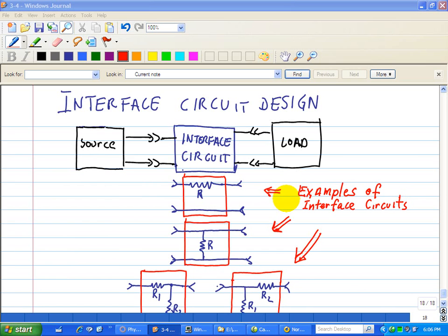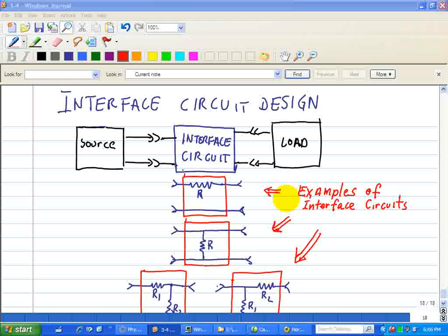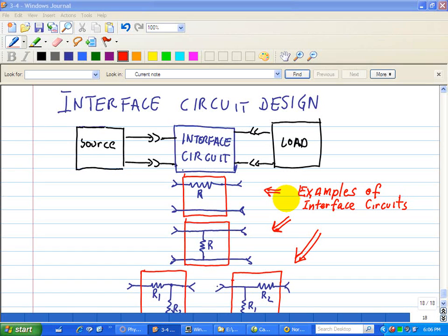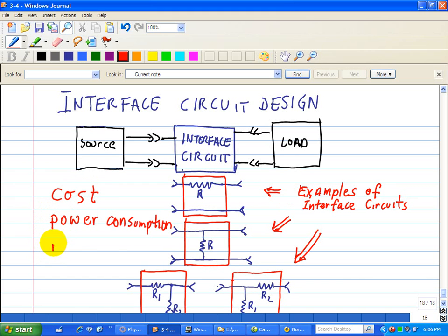Generally, there will be several ways to meet the interface constraints, and then it becomes necessary to evaluate the various alternatives using other factors, such as cost, power consumption, and reliability.